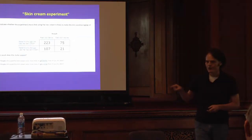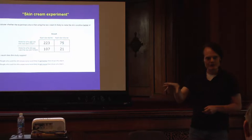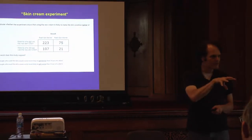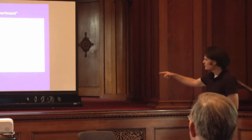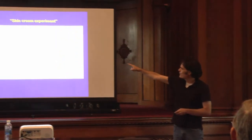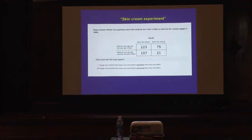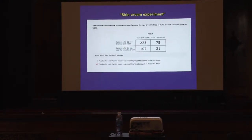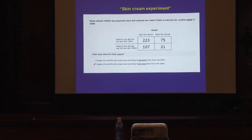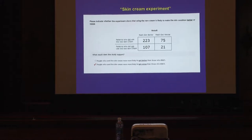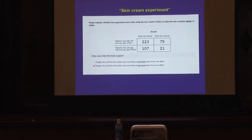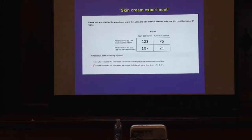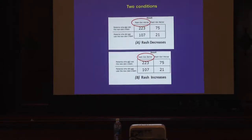You want to know the ratio of good results versus bad results, conditional on being assigned to the treatment or control. In the treatment group, 223 got better and 75 got worse — about three times more likely to get better than worse. But in the control group, 107 got better and 21 got worse — five times more likely to get better in the control group. So the right answer is that people who use the skin cream are actually more likely to get worse than those who didn't.